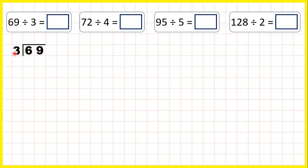Now 6 divided by 3 is exactly 2, and that's because 2 times 3 is 6. So we don't have a remainder, and we can move straight on to the next digit. 9 divided by 3 is exactly 3, and that's because 3 times 3 is 9. So our answer is 23.